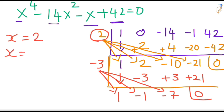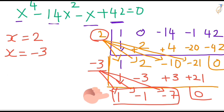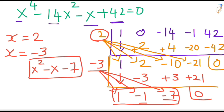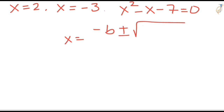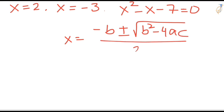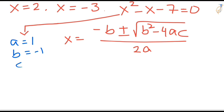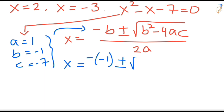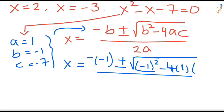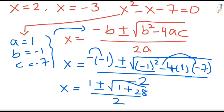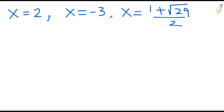The remaining factor is the quadratic X squared minus X minus 7. Using the quadratic formula: X equals minus b plus or minus square root of b squared minus 4ac, divided by 2a. Here a equals 1, b equals minus 1, c equals minus 7. Substituting: X equals 1 plus or minus square root of 1 plus 28, divided by 2. That gives X equal to (1 plus root 29) over 2, and X equal to (1 minus root 29) over 2.